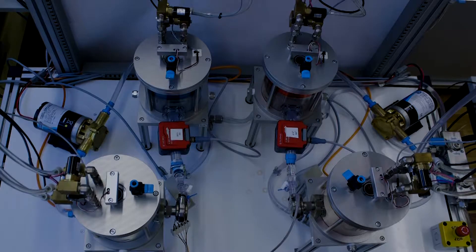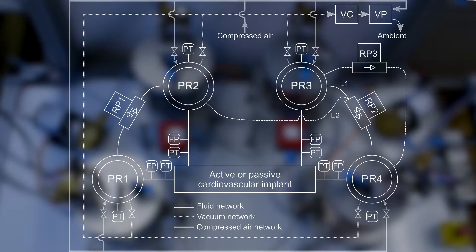The hardware part of the hybrid mock circulation is divided into a hydraulic and a pneumatic system. The hydraulic system comprises four pressure reservoirs. Their pressures are controlled by using pressurized air and vacuum.